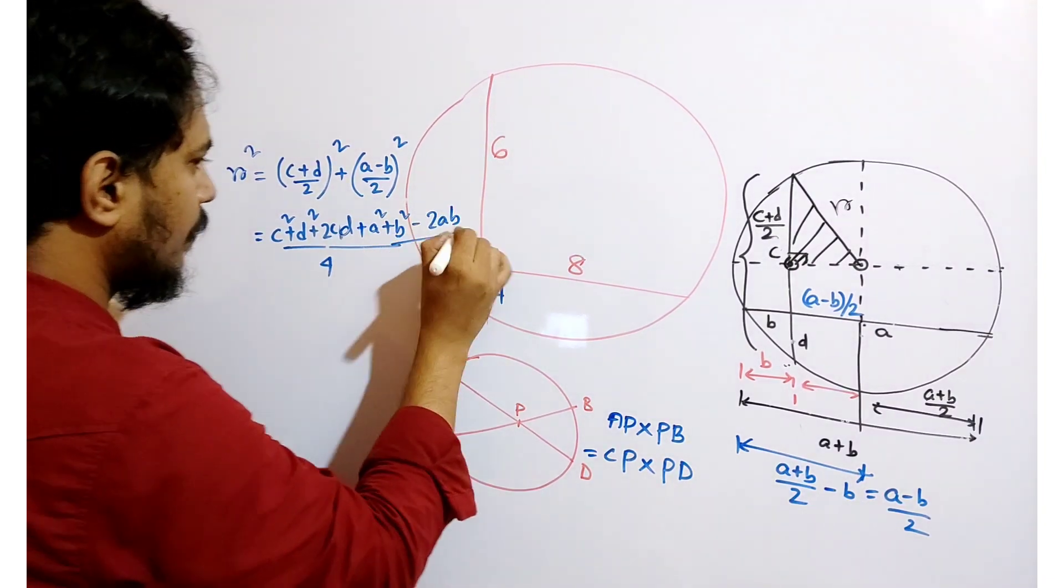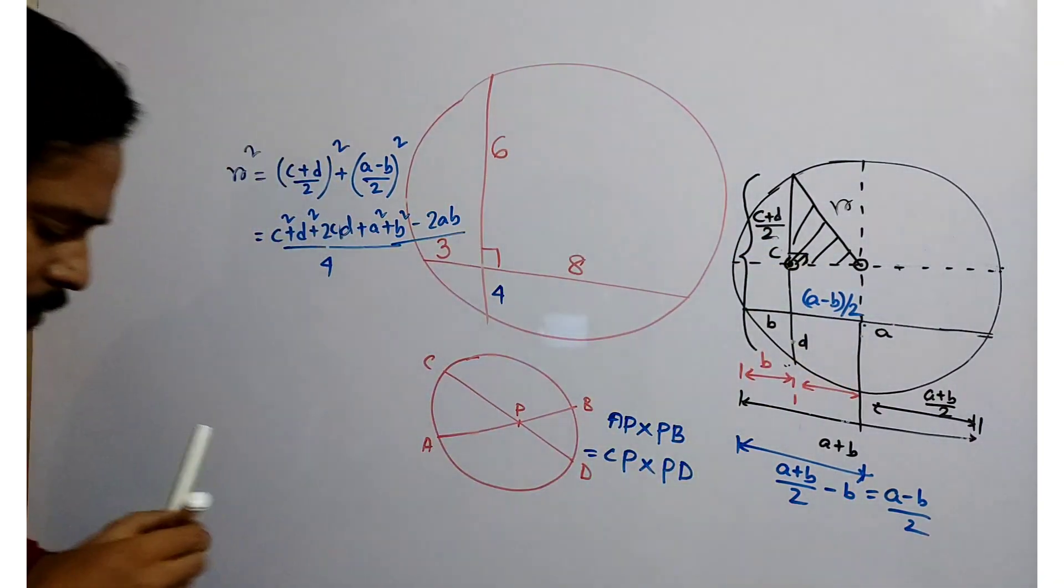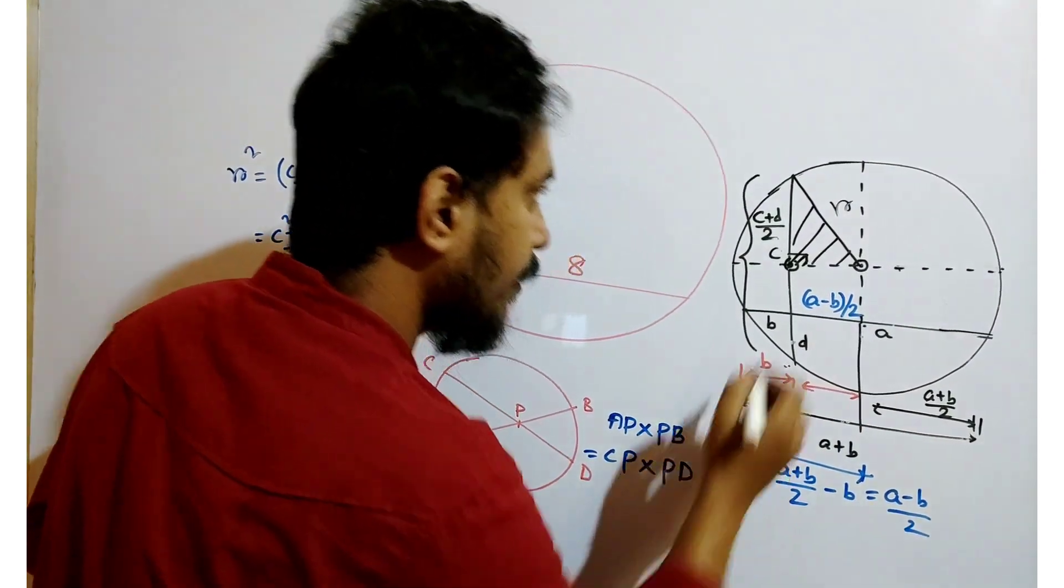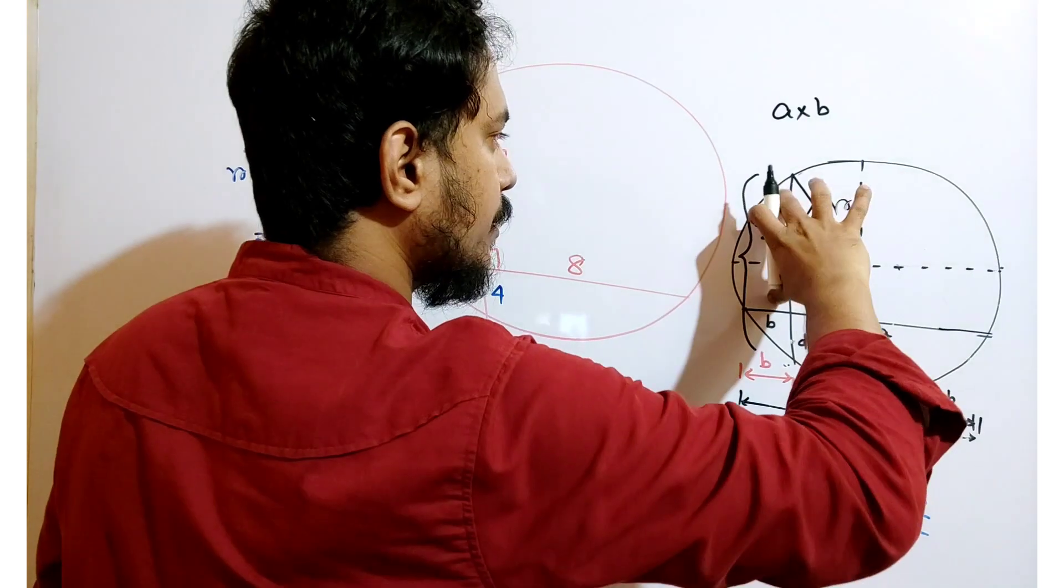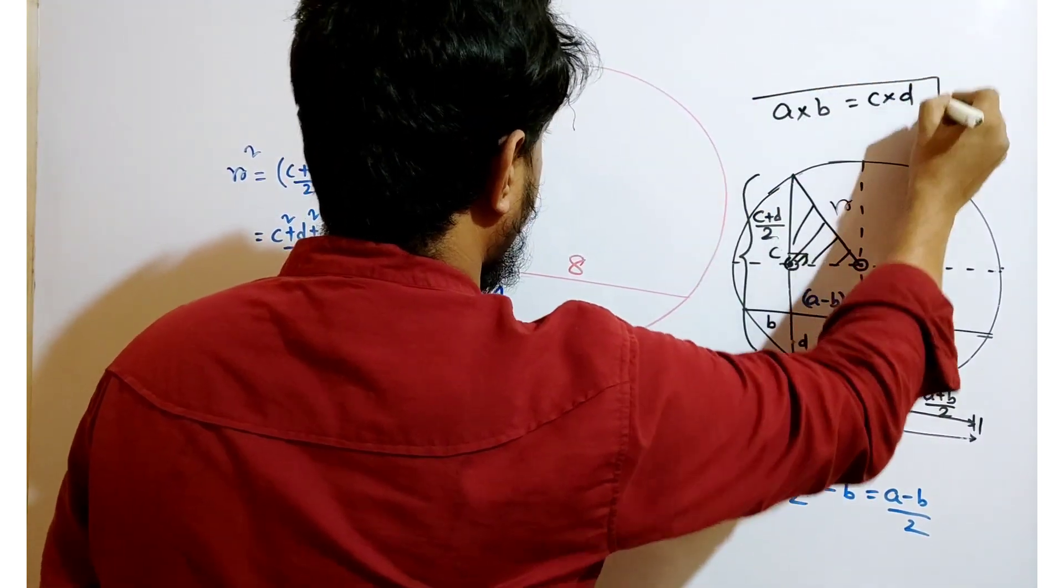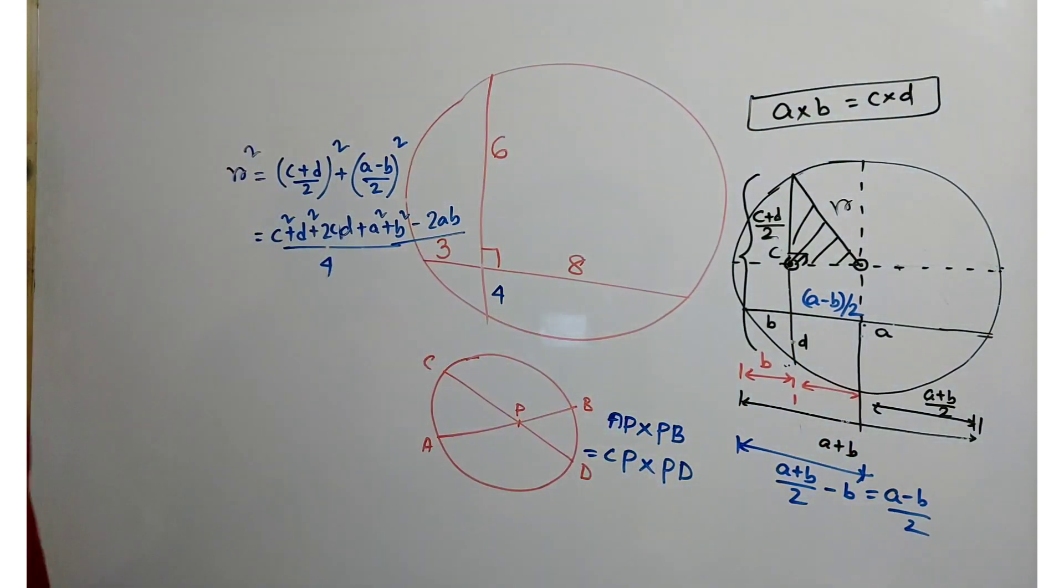Now, those two chords intersect that means A into B which is equal to C into D.